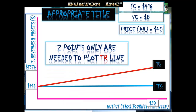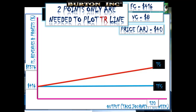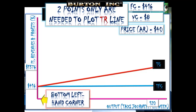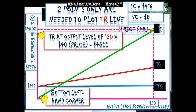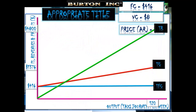One to go: total revenue. Two points only are needed to plot your total revenue line. Once you've got those two points, put your ruler on, draw the line, extend it out if necessary. The bottom left-hand corner is always the starting point for total revenue — if we sell nothing, we get zero dollars in revenue, so zero at zero, the origin. At 120 taxi journeys, the price is $40, so 120 times 40 gives us $4,800. Total revenue: done and dusted.